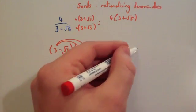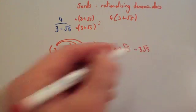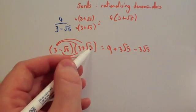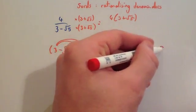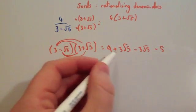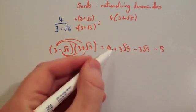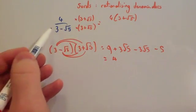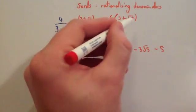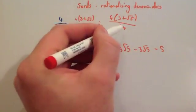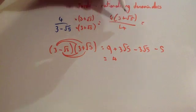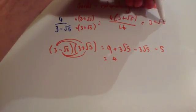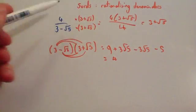And finally, minus root 5 times root 5 — remember root 5 times root 5 is 5, and negative times a positive is a negative, so minus 5. Then you simplify: 3 root 5 take away 3 root 5 is 0, and 9 take away 5 is 4. So the bottom line is 4. Notice if you times this by its conjugate you get a nice integer. So you're going to have it divided by 4 — 4 divided by 4 is 1 — so you're just left with 3 plus root 5. Fantastic, we've simplified this to just 3 plus root 5.